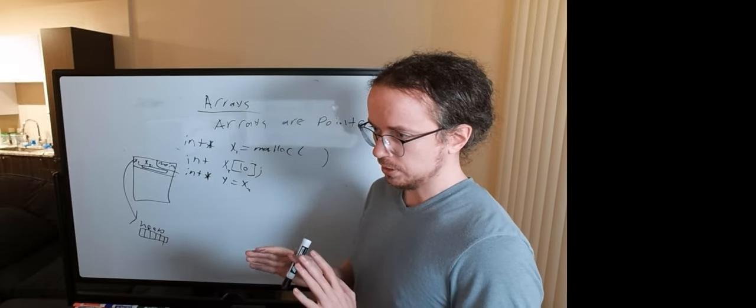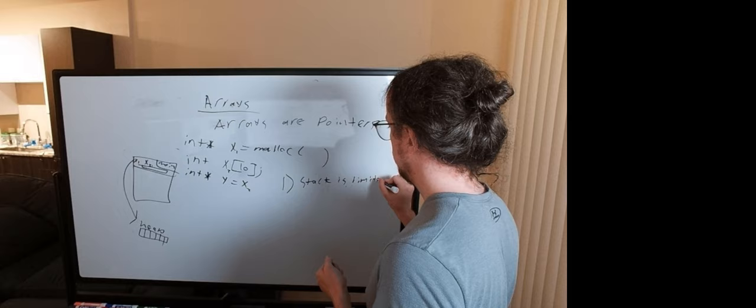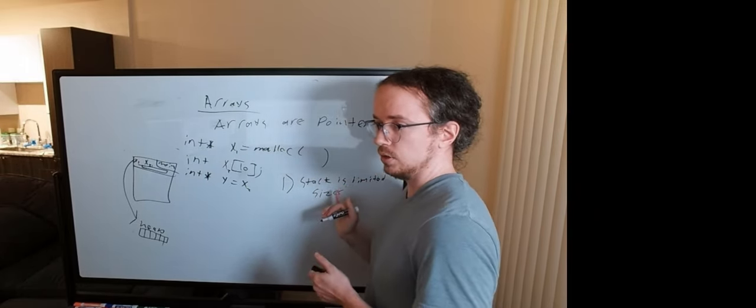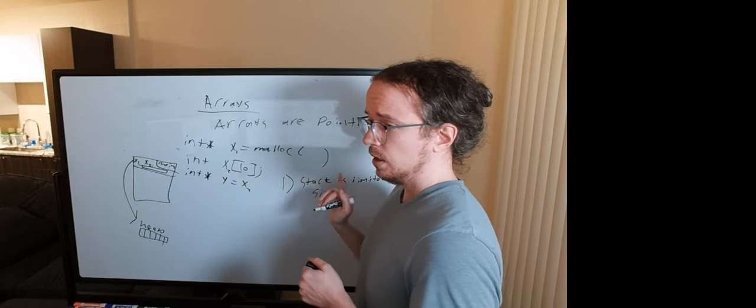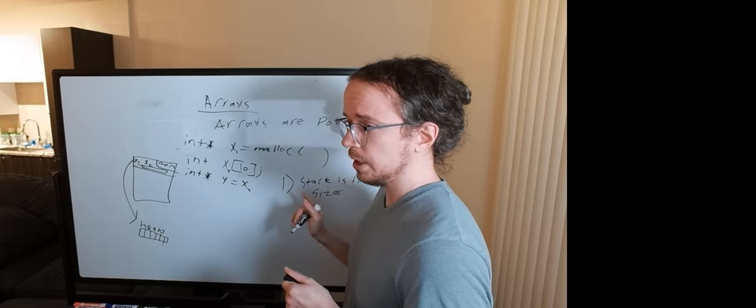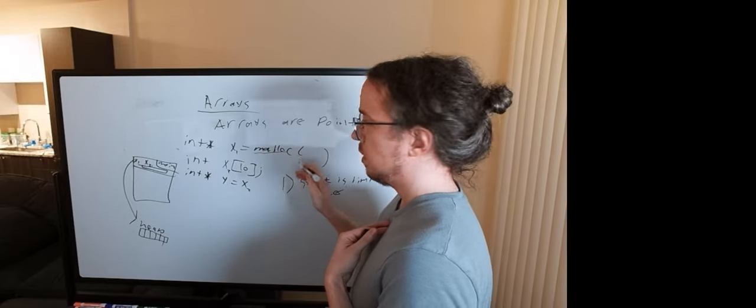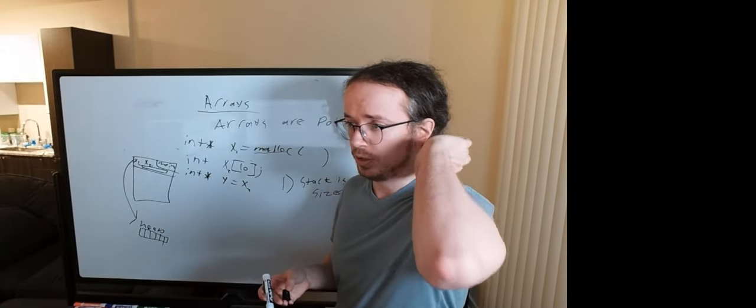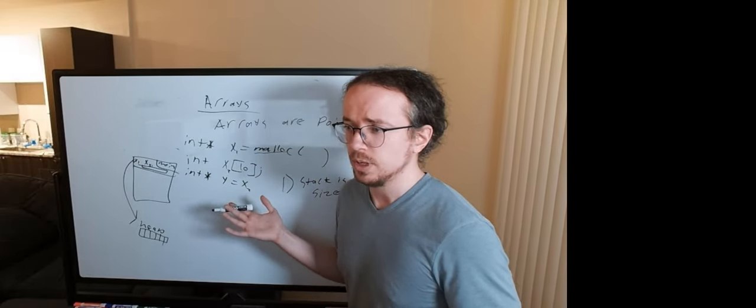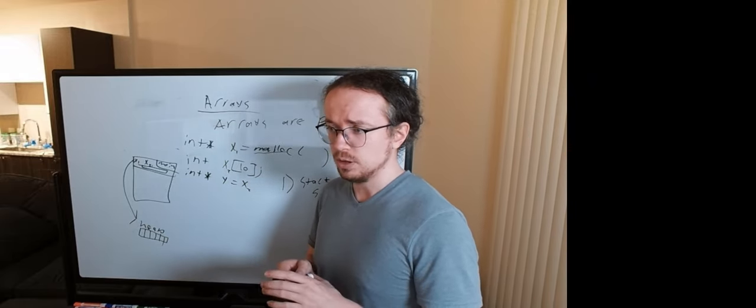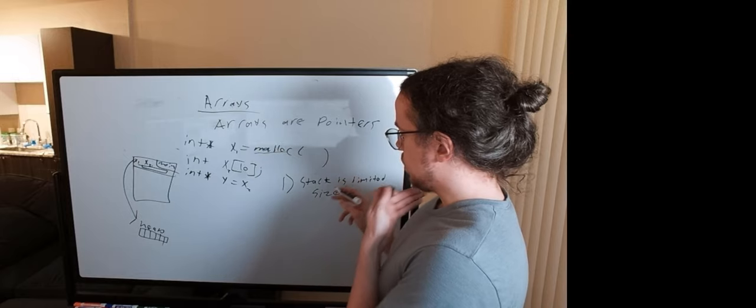However, there are a few catches here. One, the stack is limited size. Your stack can only hold an array so large. If you don't know how large your array can be, you don't want it on the stack. If you try to declare an array that is too big for the stack, it will let you and your program will promptly crash. So you want to pretty much always use malloc because you don't have this space limitation or at least that space limitation is more like the amount of RAM your system has and not the default stack size is something like one megabyte or two megabytes. It depends on your system. You can make it larger, but you just shouldn't. It's just better to use malloc. It's portable. It will always work.